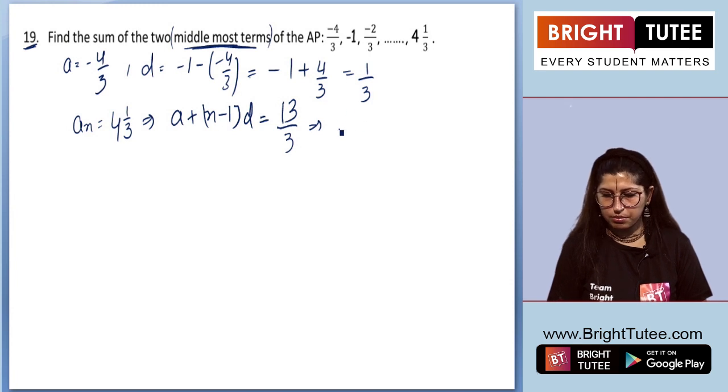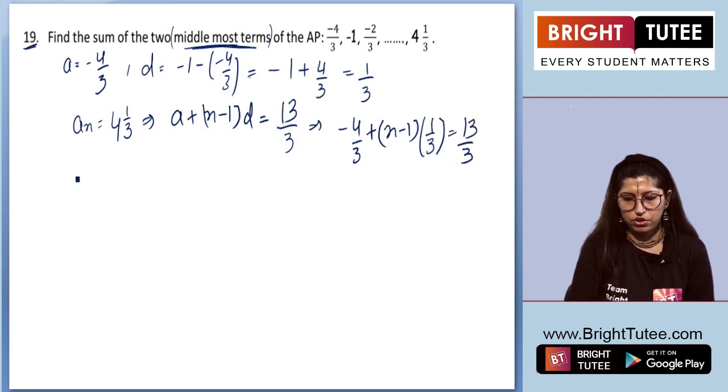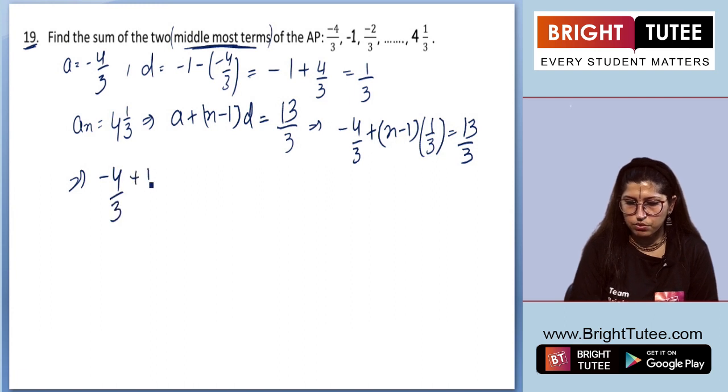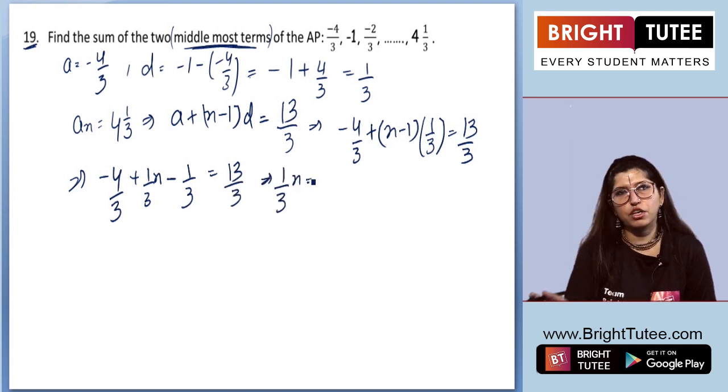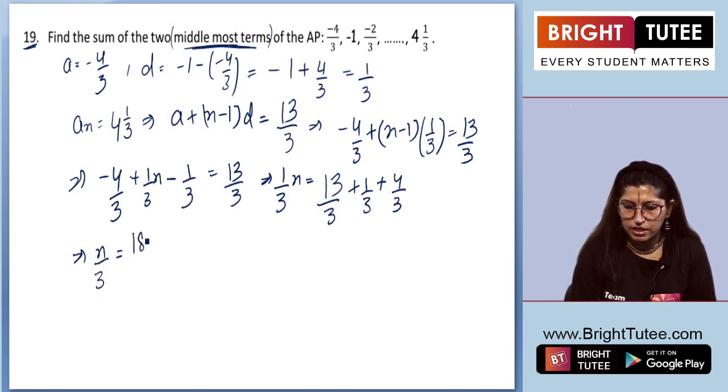Now we know A and D. So A will be minus 4 by 3 plus N minus 1, D is 1 by 3, equals 13 by 3. Solving this, we get minus 4 by 3 plus 1 by 3 N minus 1 by 3 equals 13 by 3. So 1 by 3 N, shifting it to the right hand side, 13 by 3 plus 1 by 3 plus 4 by 3. So after solving this, we will be getting N by 3 equals 18 by 3. We can cancel these out. So we have N as 18.